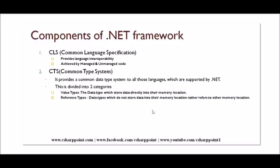A benefit of CLR is language interoperability. Language interoperability means providing code execution facilities to different applications written in different programming languages. For example, if you have a Java application and want to run it in the .NET framework, that facility is language interoperability. Language interoperability is achieved through managed and unmanaged code.